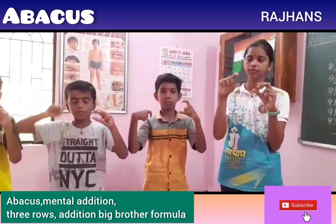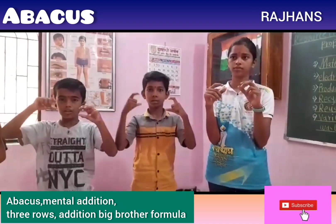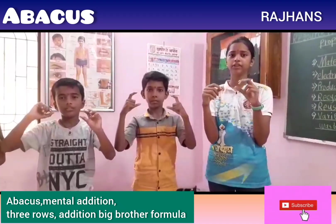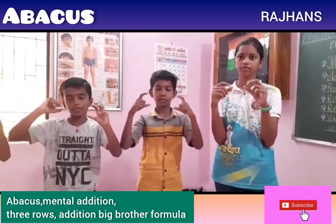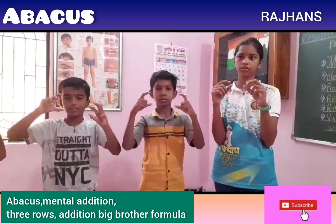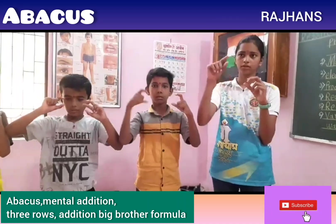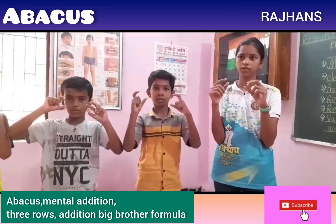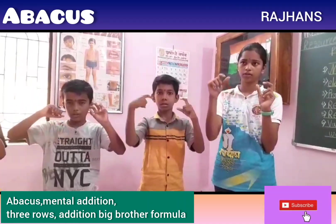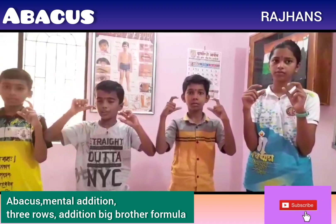Next: 2, 6, 9 — that is 17. Correct, Jignesh. Next: 7, 9, less 1 — that is 15. Correct answer.